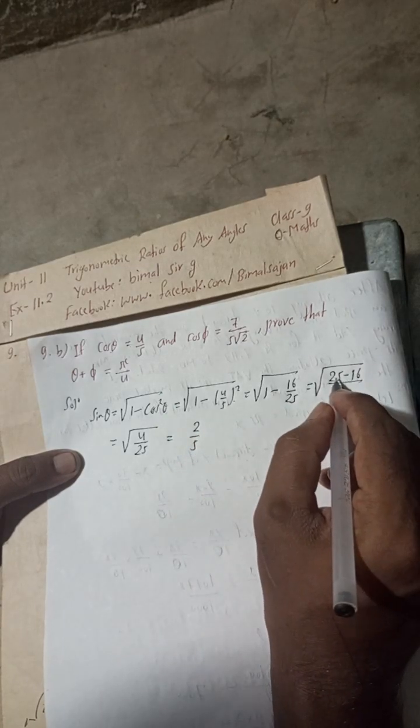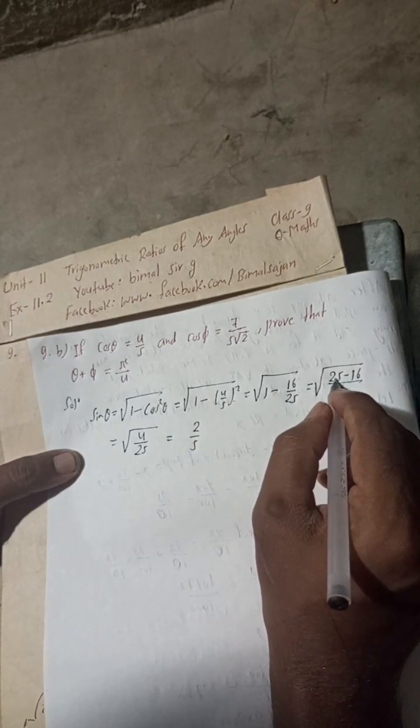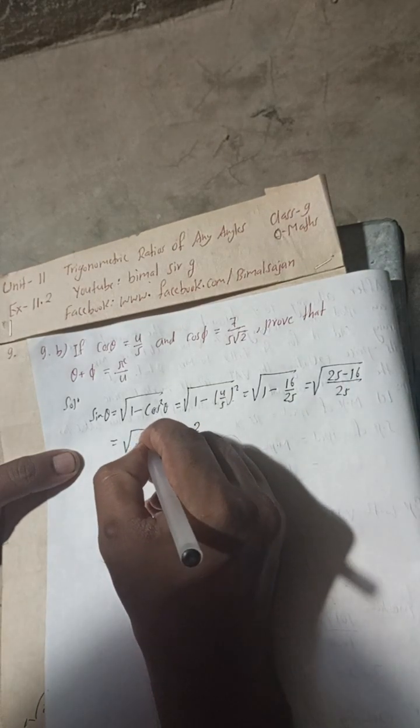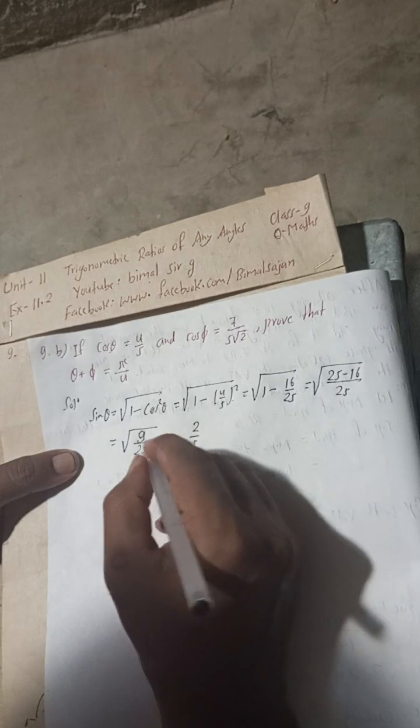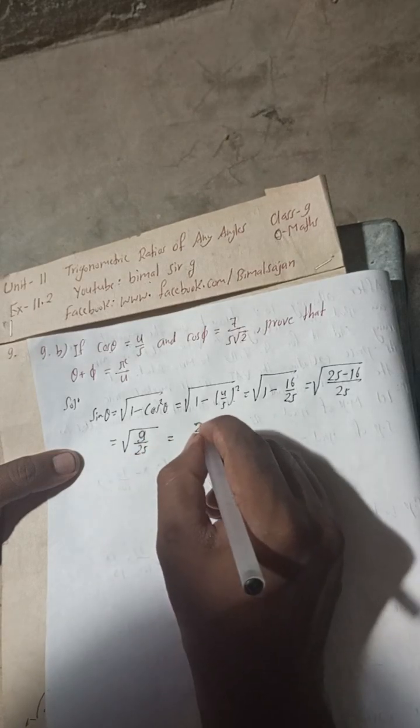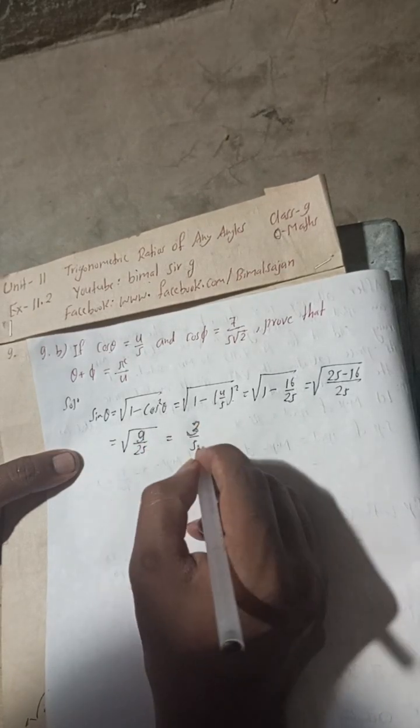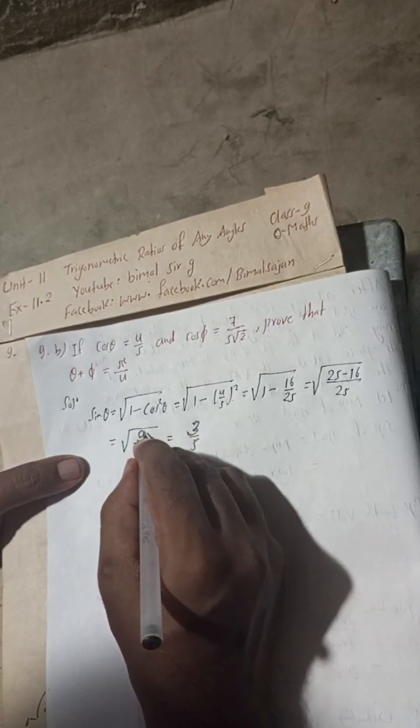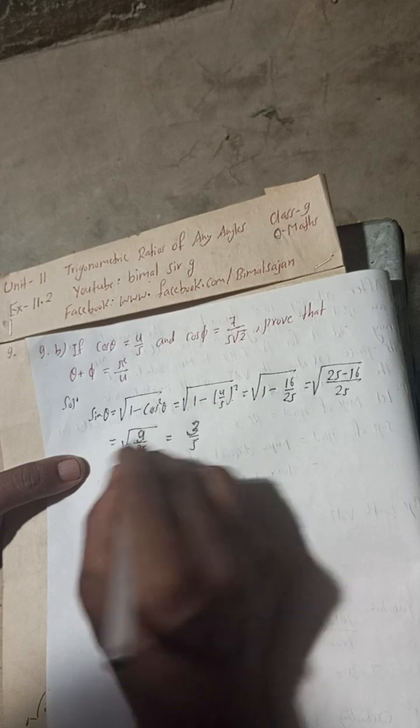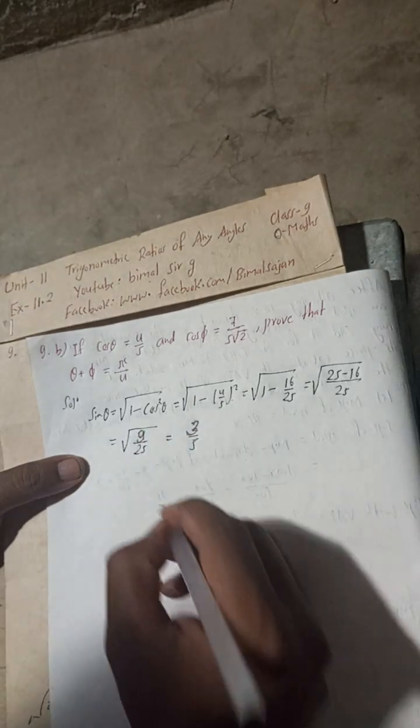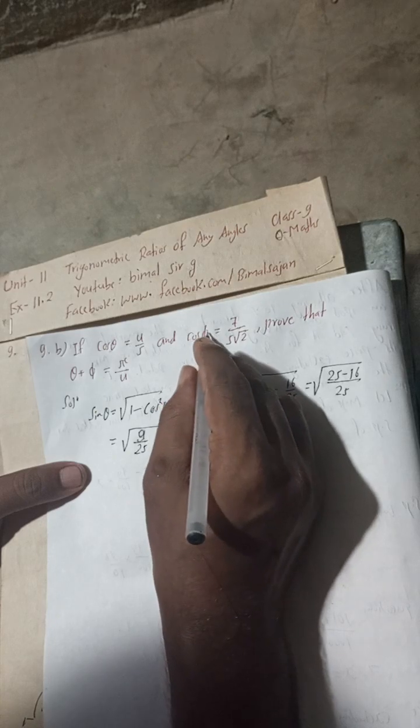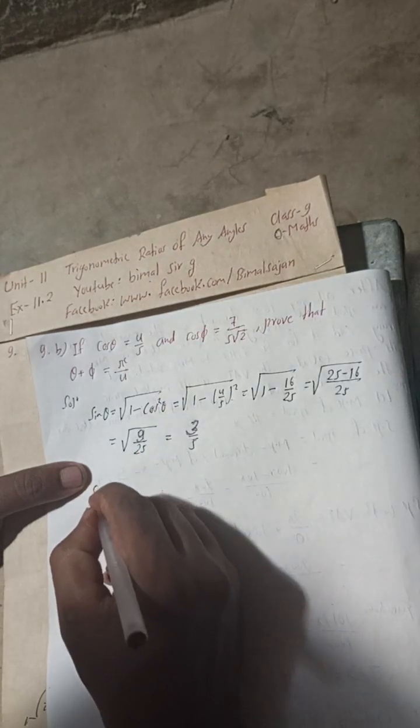25 minus 16 is 9, so this is √(9/25) which equals 3/5. This is 3² and 5², so the square and root cancel. Now we can find sin φ with the help of cos φ.